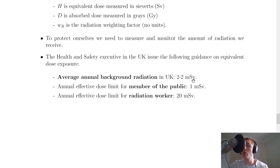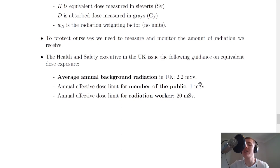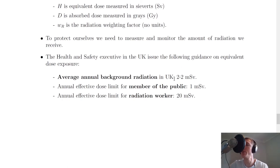You need to remember these three numbers, all in millisieverts: 2.2, 1, and 20. The easiest one to remember is probably 1 millisievert, because that applies to you and I as members of the public who don't work with radiation. From there, remember that a radiation worker's limit is 20 times that — so 20 millisieverts — and the odd one out is 2.2 for the average annual background radiation in the UK.